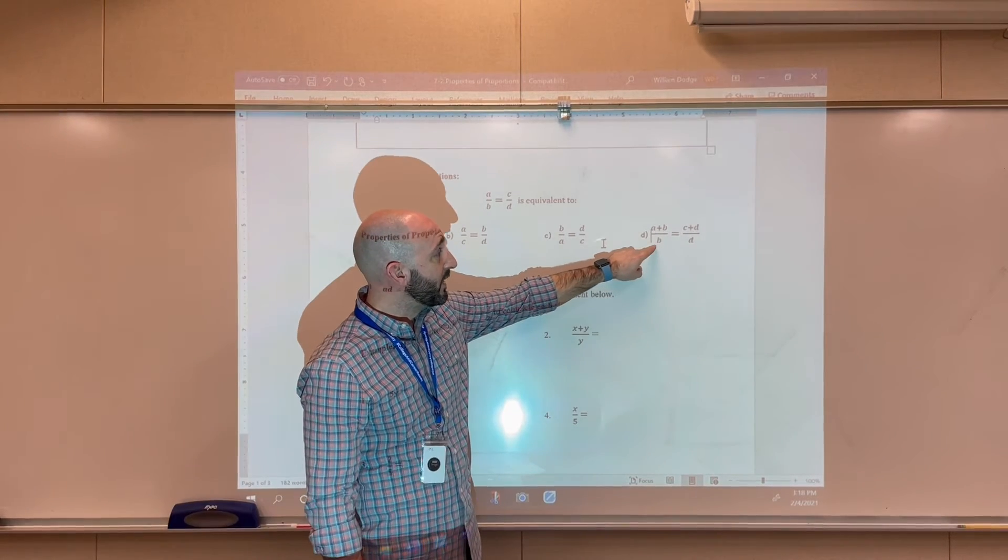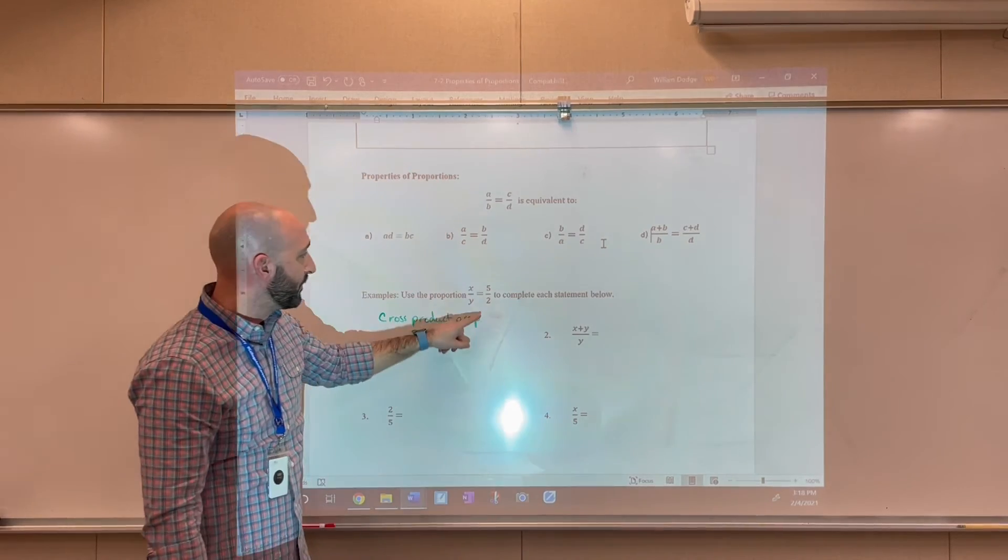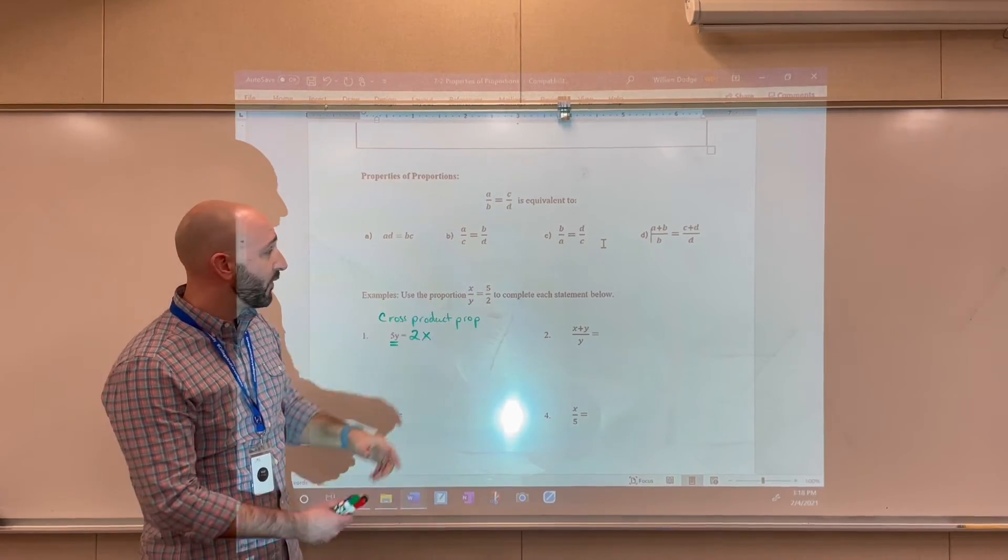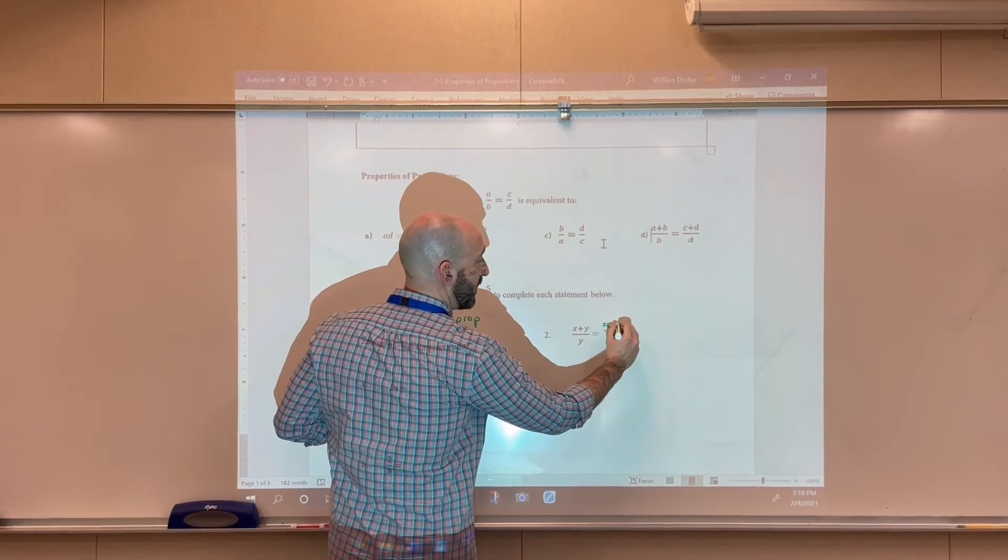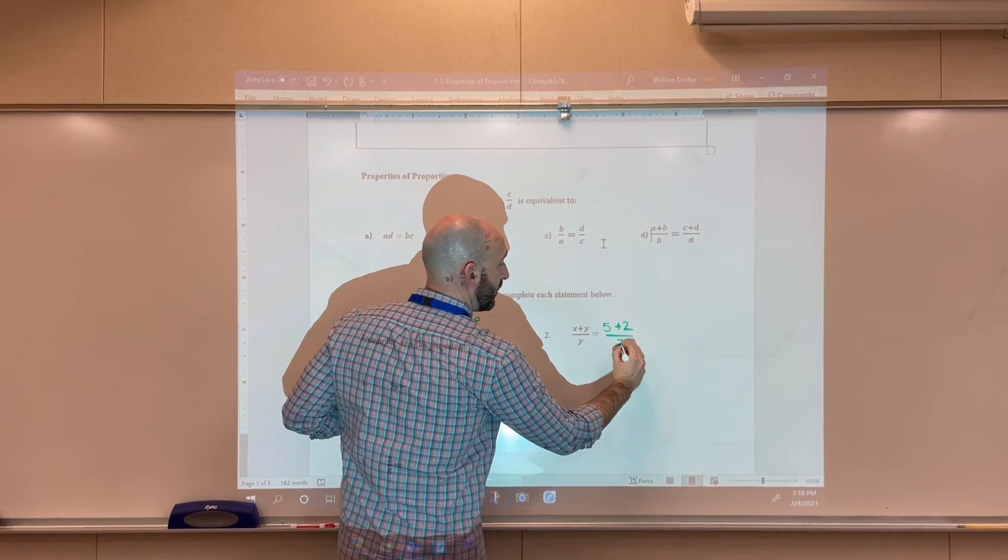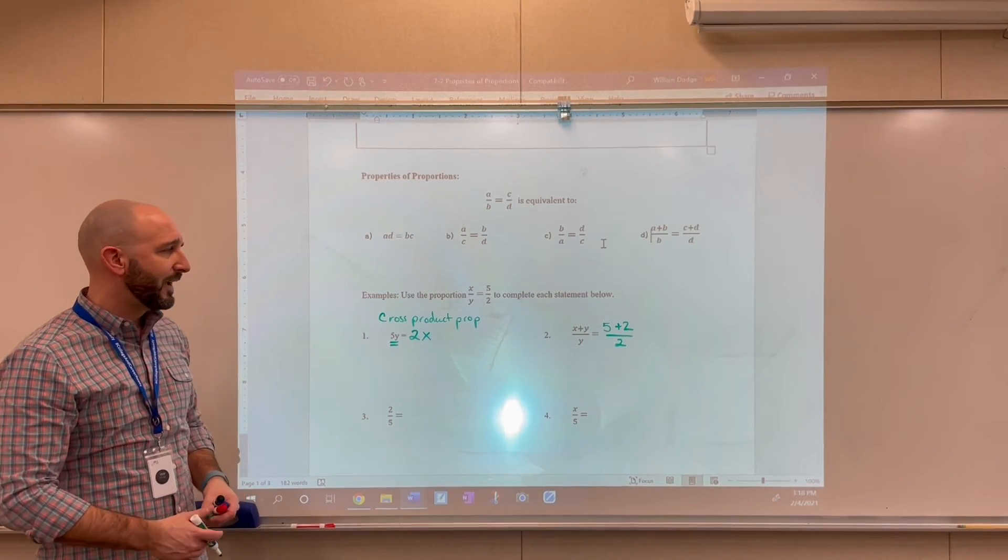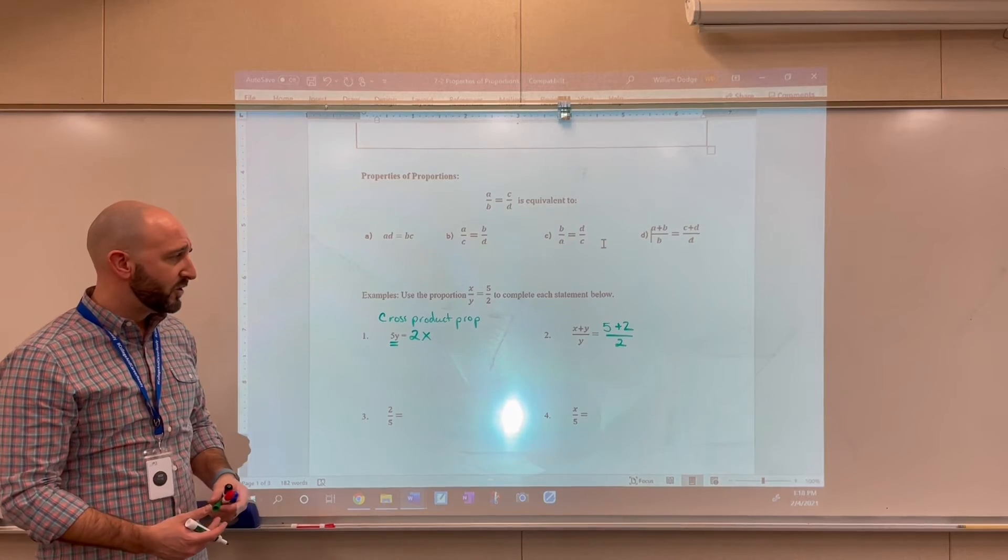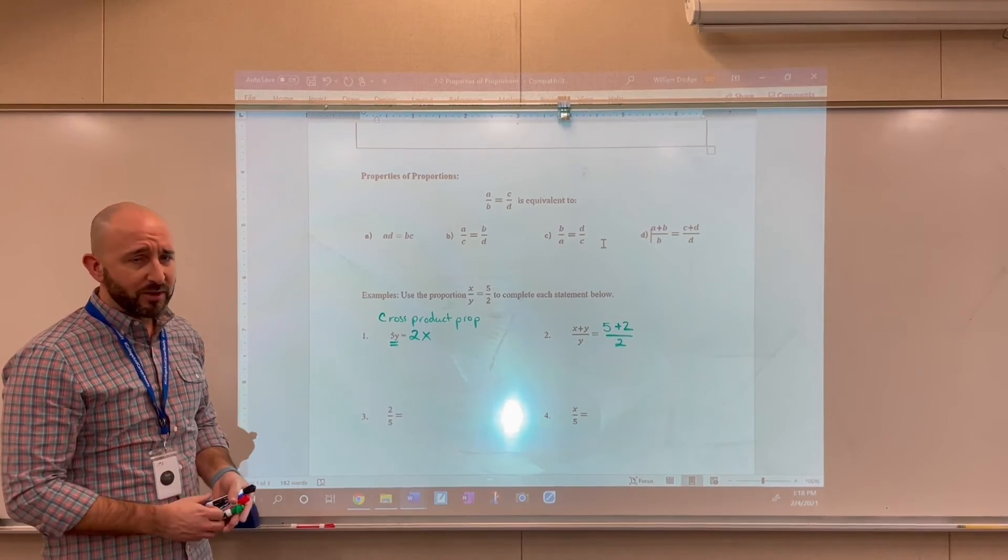Now, this property labeled d at the top of our notes says that we can also do that on the right-hand side. So an equivalent expression on the right-hand side would be 5 plus 2 all over 2. So those would be equivalent expressions. And if you wanted to, you could simplify the right-hand side to make that 7 over 2 as well. But I'm going to leave it in this form just to kind of illustrate the property for you.